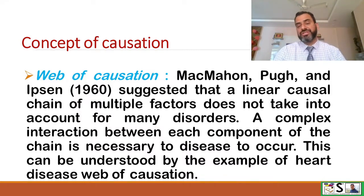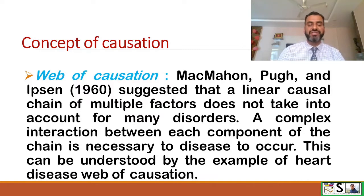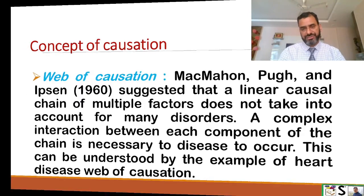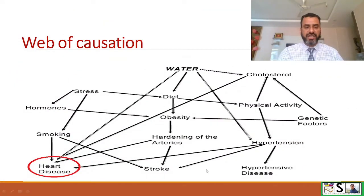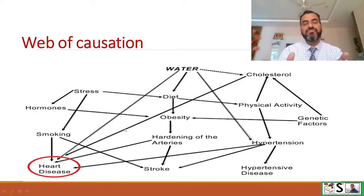The next concept is the web of causation. McMahon, Pugh, and Ibsen suggested that a linear causation chain or multiple factors does not fully account for many disorders. A complex interaction between each component of the chain is necessary for disease to occur. This can be understood by the example of heart disease. According to this, heart disease has a web of causation — a lot of factors are involved: physical activity, cholesterol, genetic factors, stress, hormones, obesity, and the interaction between all these factors lead to heart disease. So a linear chain of causation is not sufficient; here it is a web of causation.